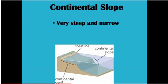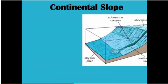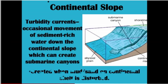Continuing out in the water, you would notice that the land drops off steeply. We call this the continental slope. In some parts of the continental slope, there are submarine canyons, which are carved when mud and sand on the continental shelf becomes disturbed, and that heavy, sediment-rich water scrapes along the side of the continental slope to form the submarine canyons.